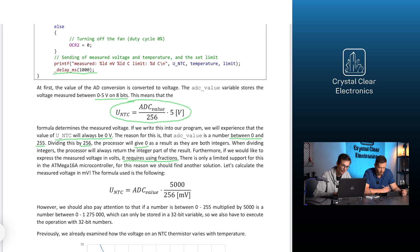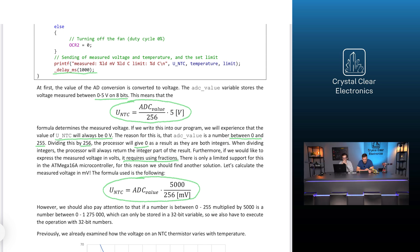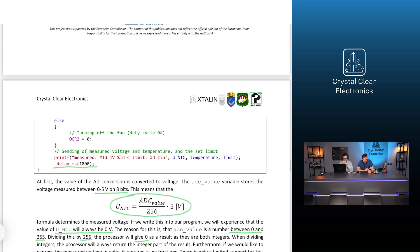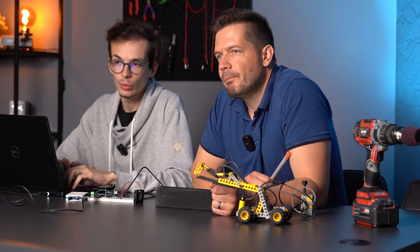Calculate the measured voltage in millivolts. The formula will finally look like this: UNTC equals ADC_value multiplied by 5000, divided by 256, to get millivolts. However, we should also pay attention to the fact that if a number between 0 and 255 is multiplied by 5000, it becomes a number between 0 and 1.275 million, which can only be stored in a 32-bit variable, so we also have to execute the operation with 32-bit numbers. And the numbers 5000 and 256 should be placed in a constant value variable. So, the NTC resistance value, which is temperature dependent, was converted to a number — ADC_value in the code — and from that we had to calculate the voltage.